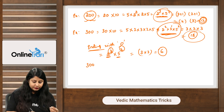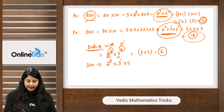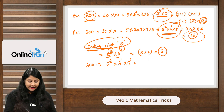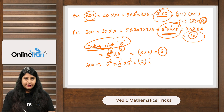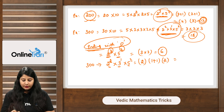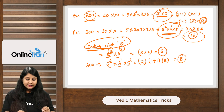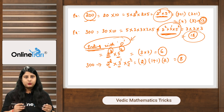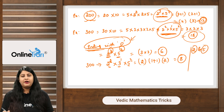For 300 = 2² × 3¹ × 5², if asked for factors ending with 0: don't add 1 to powers of 2 and 5, but do add 1 to the power of 3. So: 2 × (1+1) × 2 = 2 × 2 × 2 = 8. There are 8 factors of 300 ending with 0. Remember: for ending-with-0 questions, only skip adding 1 for the bases 2 and 5.